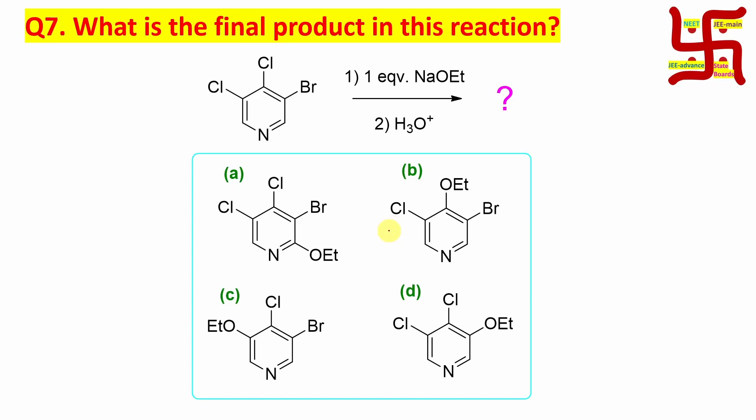Question is: what is the final product of this reaction? Four options are given. Look at the question carefully. It is a pyridine derivative having one meta-bromo, one meta-chloro, one para-chloro.